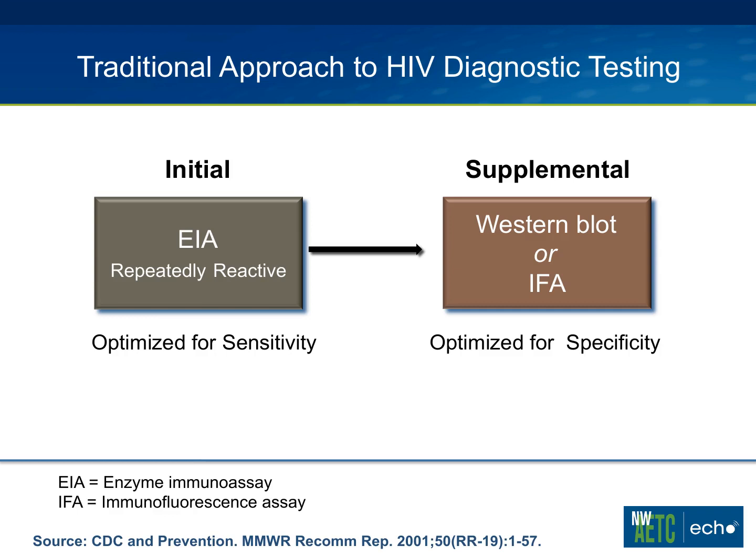The basic approach was that you did an initial EIA test — basically an enzyme immunoassay — and if that was repeatedly reactive, then you went on and confirmed with a supplemental test called a Western blot. You could also use an IFA, but typically we're all familiar with the Western blot concept.